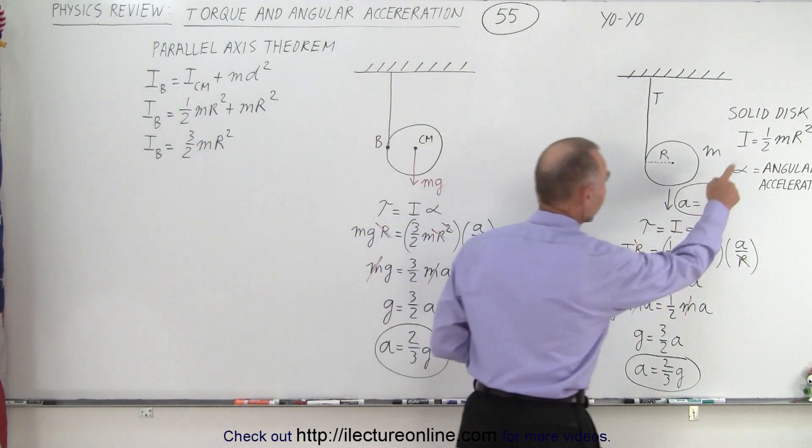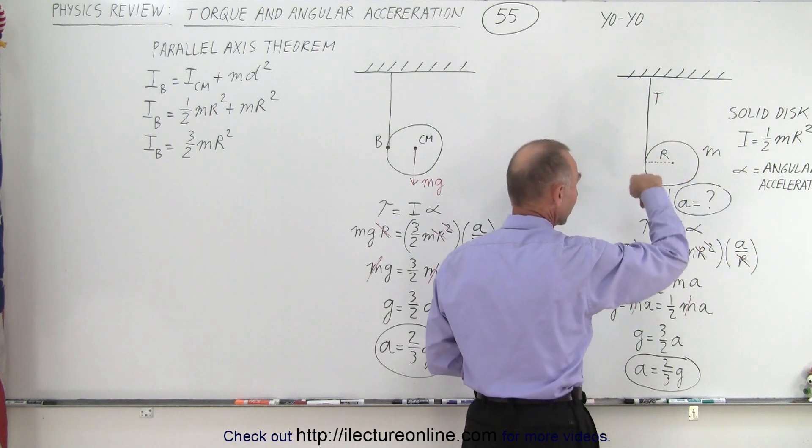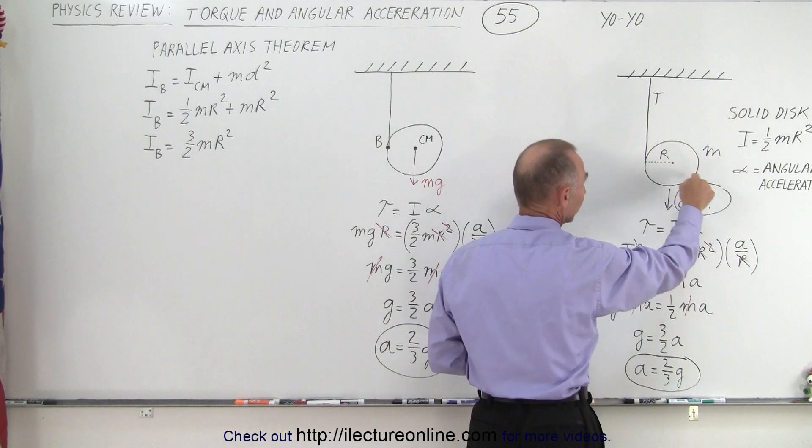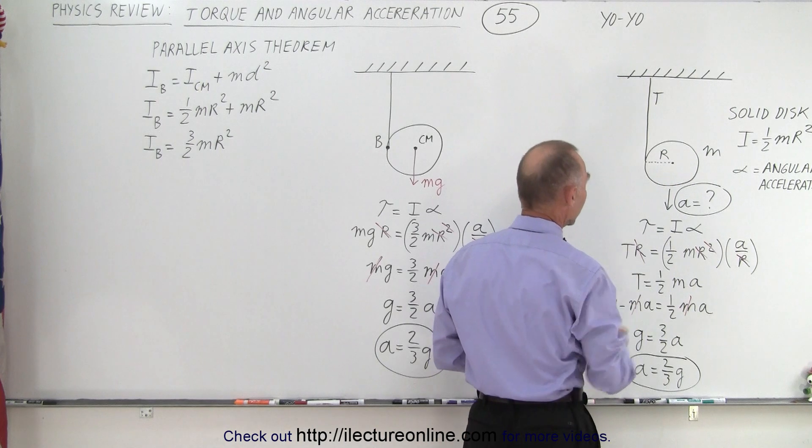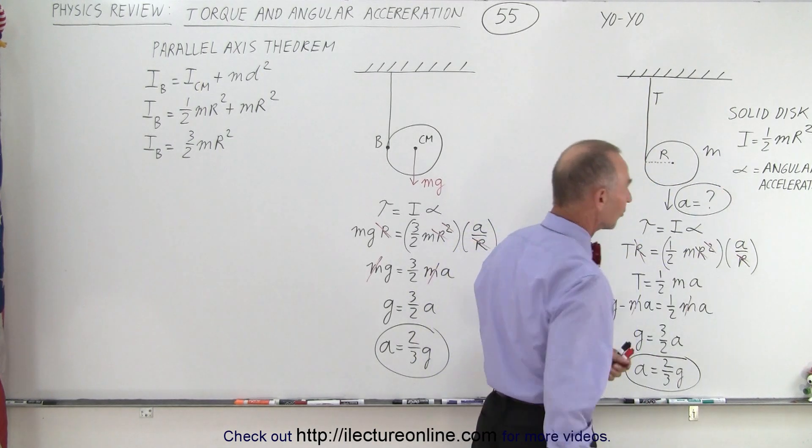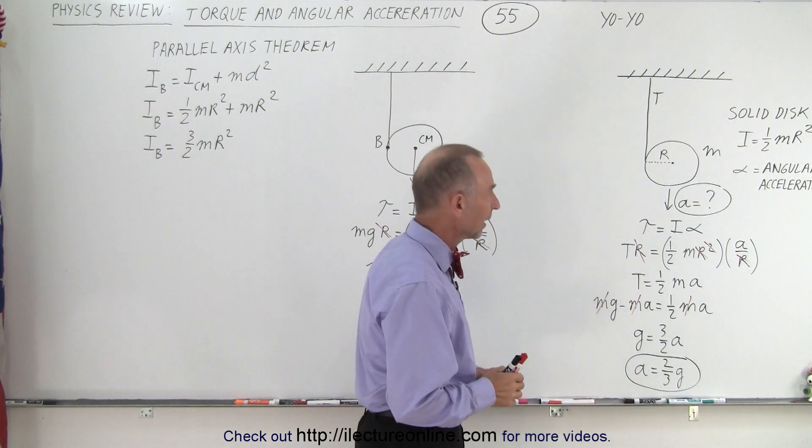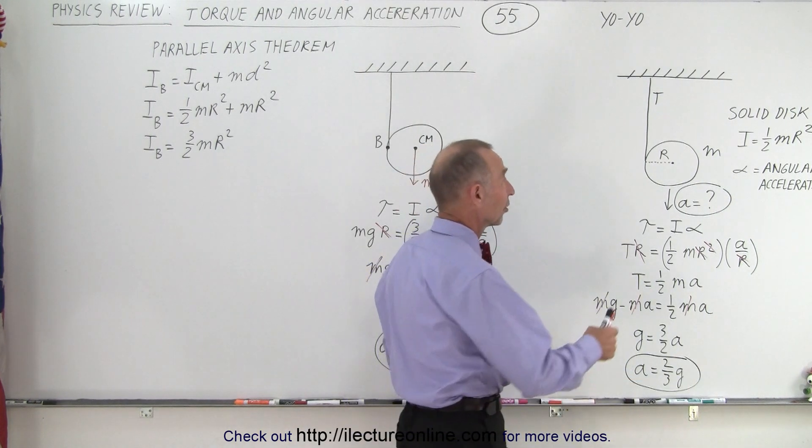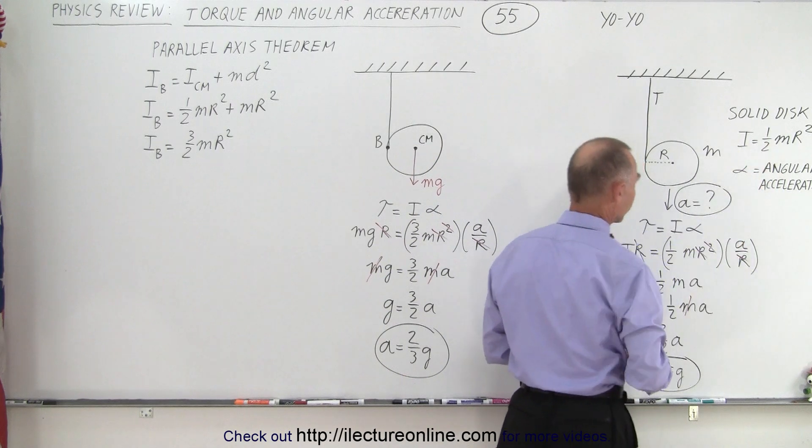Notice the yo-yo can be considered a solid disc. We have a string wrapped around it. The yo-yo has a certain mass m, certain radius r. The tension in the string is t, and of course the angular acceleration is the symbol alpha. Notice if it's a solid disc, the moment of inertia is one half m r squared.